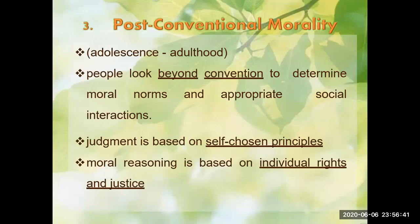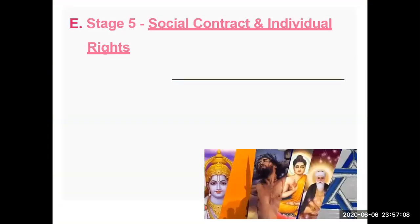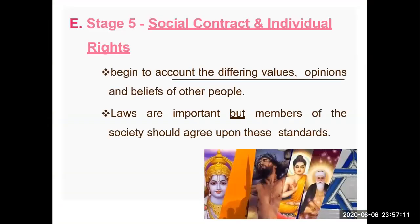The last level is post-conventional morality, which applies from adolescence to adulthood. People at this level look beyond convention to determine moral norms and appropriate social interaction, guided by self-chosen principles. You now know social rules and regulations, you know how to make interpersonal relationships, and now it is your turn to choose your own principles, rights, and justice. This level is also divided into two stages, the first of which is social contract and individual rights. In this stage, people's views are different and they can strongly present their views and values.